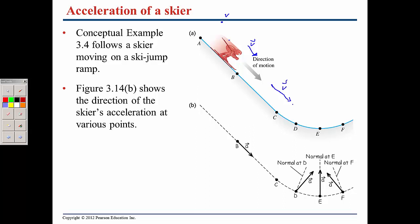At point D it's going to change direction a little bit and be a little longer since he is still going downhill. At point E it might look like that, and then at point F it might look like that — a little bit shorter because he is now going uphill. That's kind of what your intuition says.